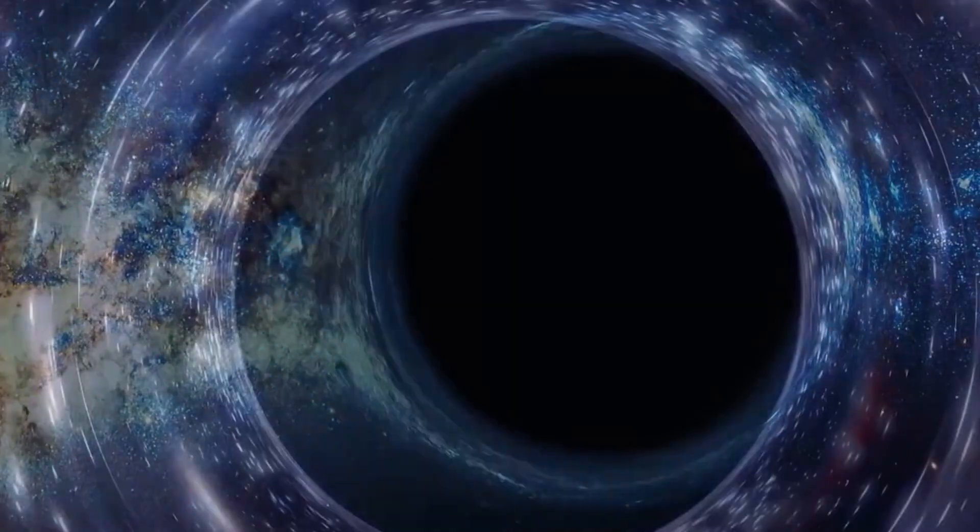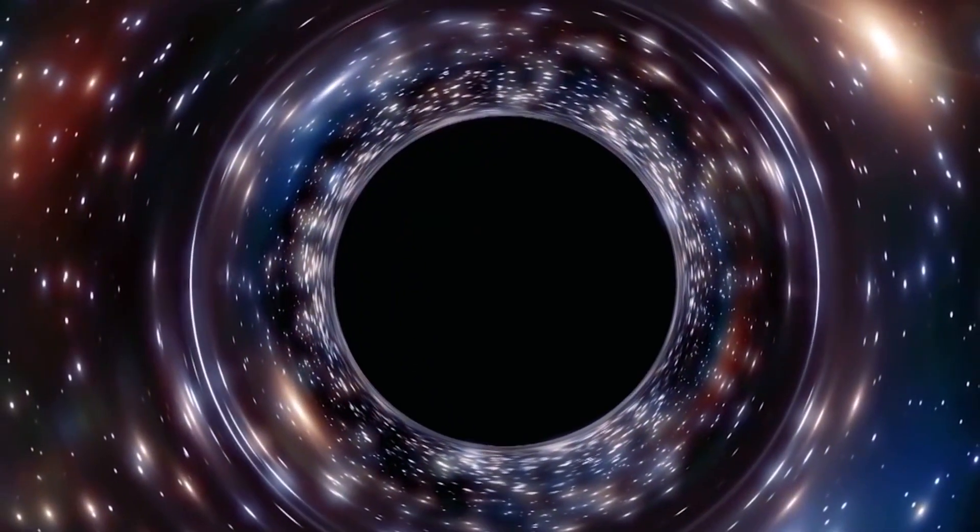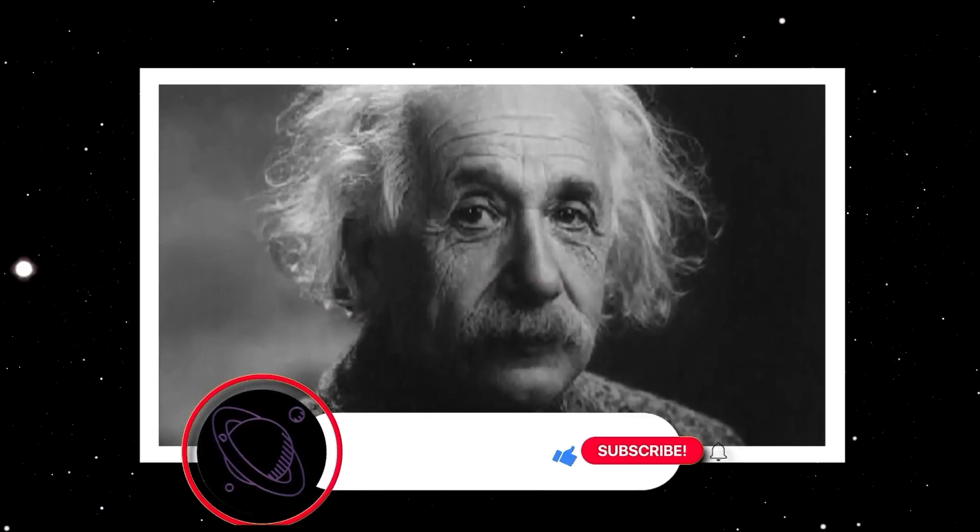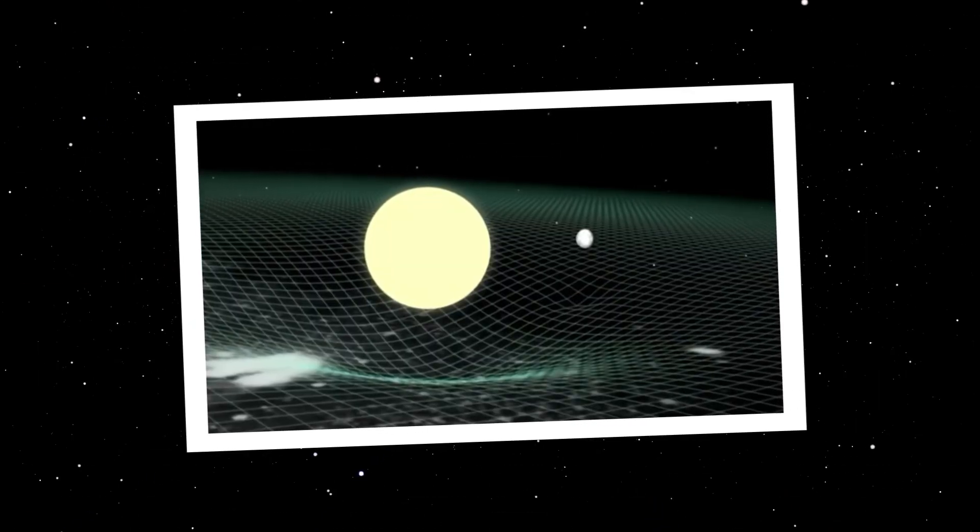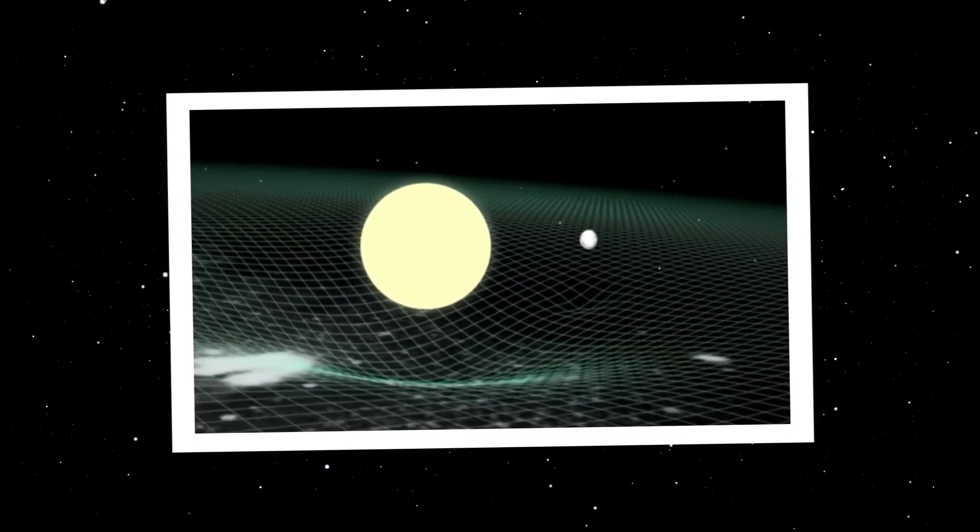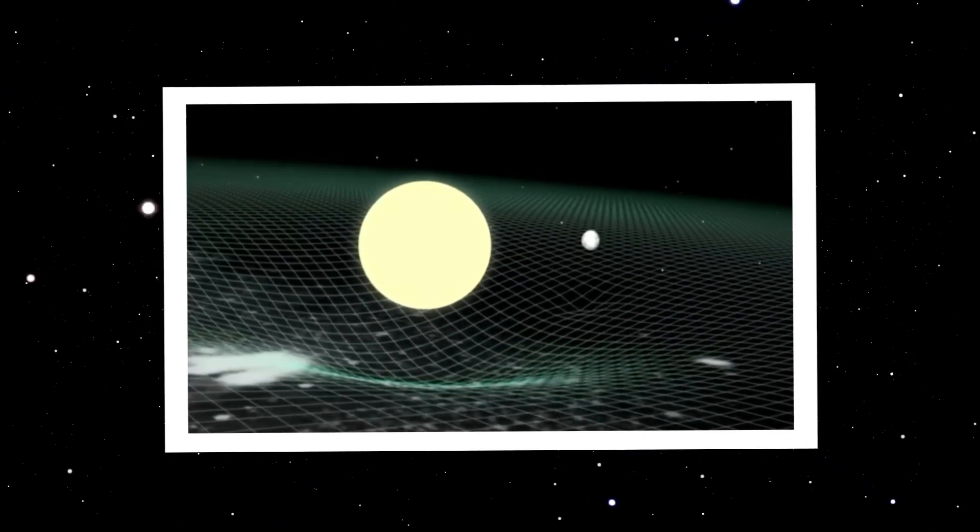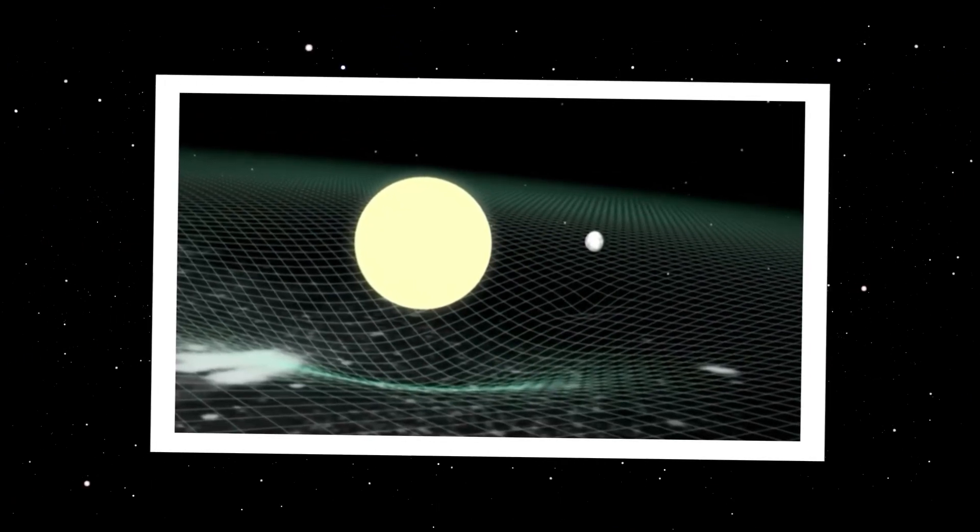Interestingly, black holes have a lasting legacy through their gravitational influence on spacetime. Albert Einstein described gravity not as a mere attractive force between planets and stars, but as a warping of space and time. Massive objects, like planets and orbiting stars, follow the contours of this warped space, much like a ball spinning around a roulette wheel.